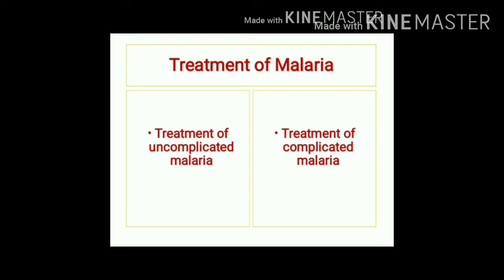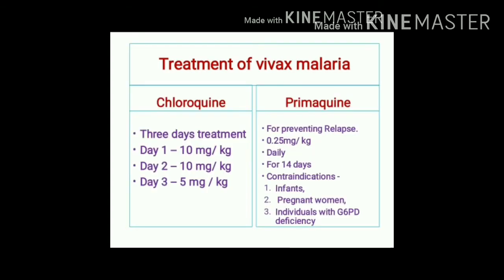Plasmodium vivax causes uncomplicated malaria. The drug of choice for treatment of vivax malaria is chloroquine, given for three days: 10 mg/kg body weight on day one and day two, then 5 mg/kg body weight on day three.